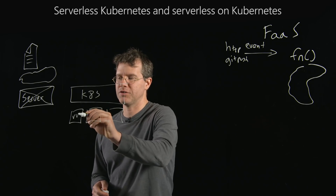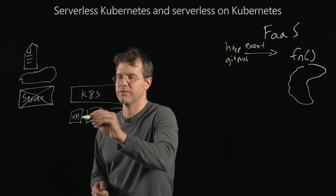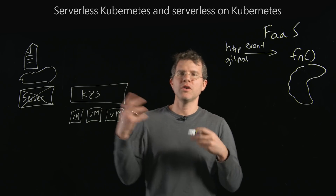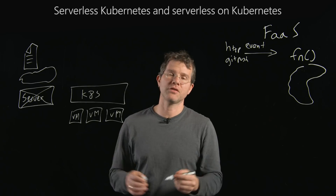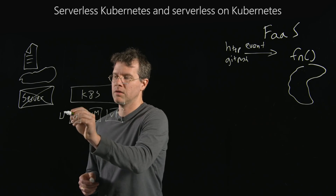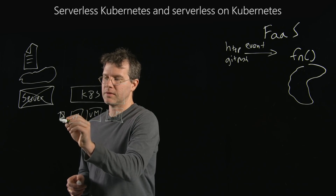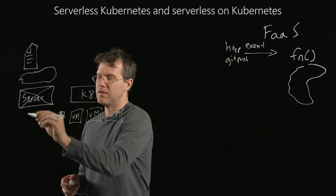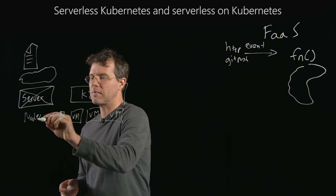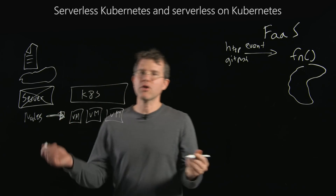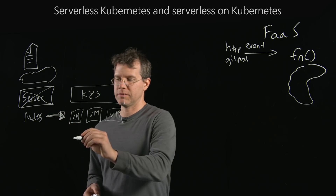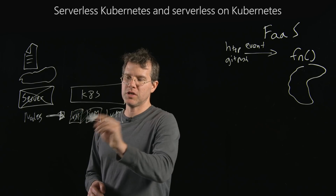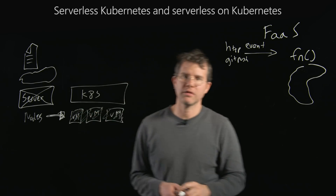So if you have servers here, VMs here — when we're talking about serverless Kubernetes or nodeless Kubernetes, these are the nodes for Kubernetes — how can I create a nodeless Kubernetes? How can I create a world where these machines have ceased to exist?